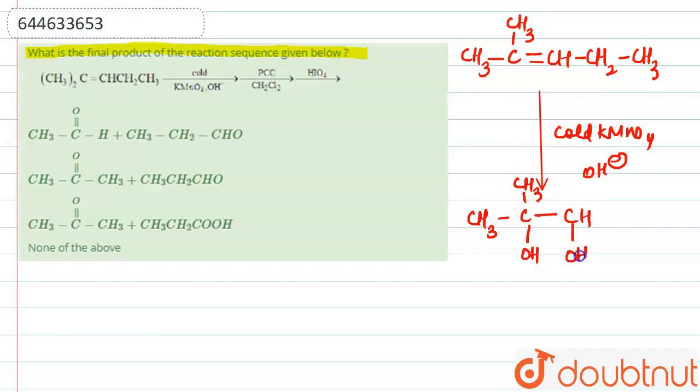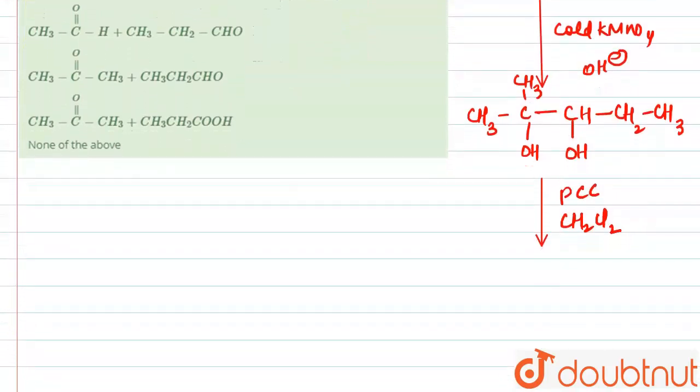So the compound formed here is this one. Now the second reagent is PCC. The role of PCC in CH2Cl2 is to oxidize secondary alcohol. So what will happen? This carbon will be converted into ketonic group. So it will be formed like this: CH3 here, OH here, it will be formed ketone CH2 and CH3.